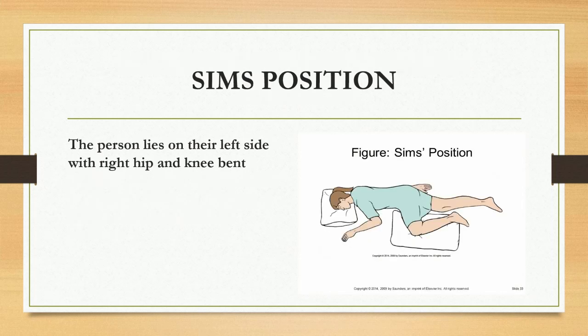Next one is Sims position. Here the person lies on their left side with the right hip and knee bent. You can see that in the picture.